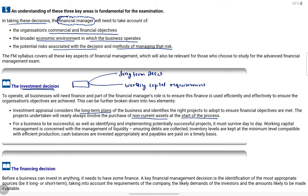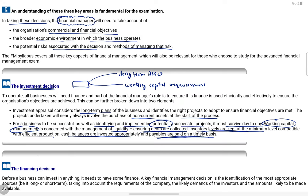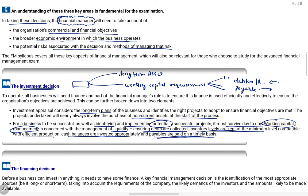For a business to be successful, as well as identifying and implementing potentially successful projects, it must also survive day-to-day. Working capital management is concerned with managing liquidity — ensuring debts are collected, inventory levels are kept at minimum compatible with efficient production, cash balances are invested appropriately, and payables are paid on time. This means collecting from debtors on time, managing payables to credit suppliers, and keeping enough cash for emergencies. These are the two types of investment decisions.